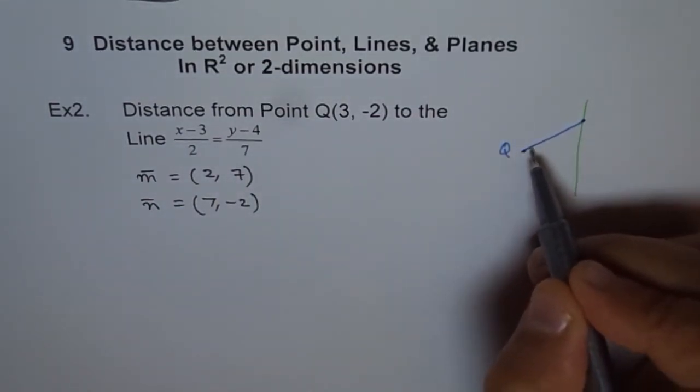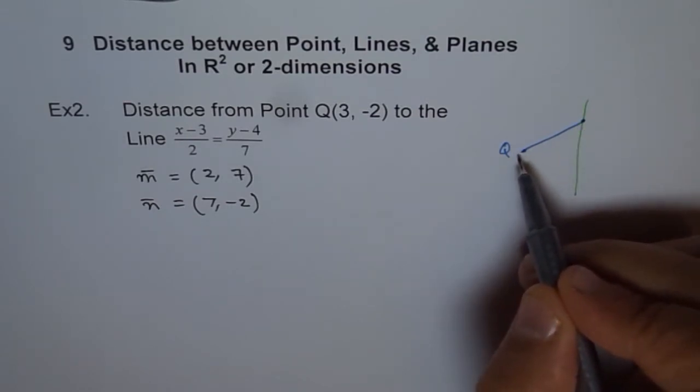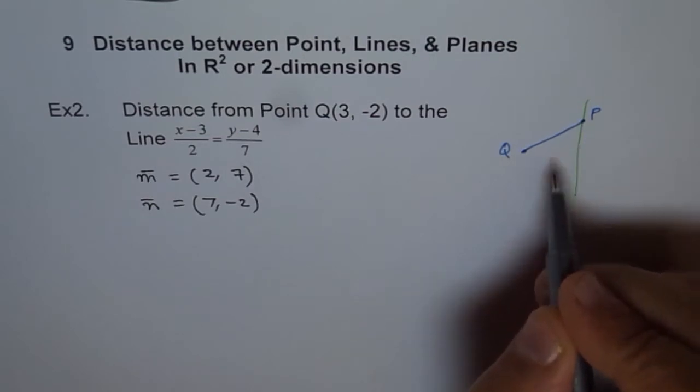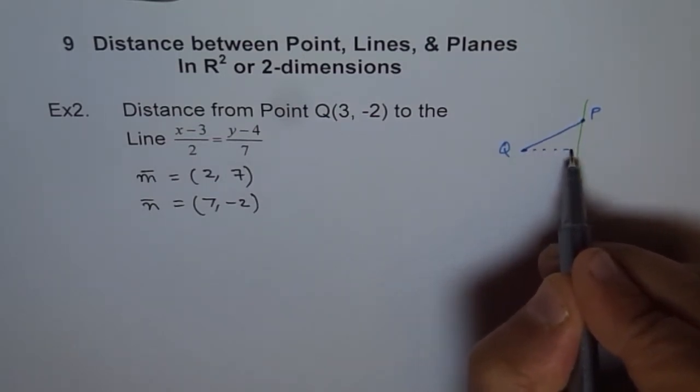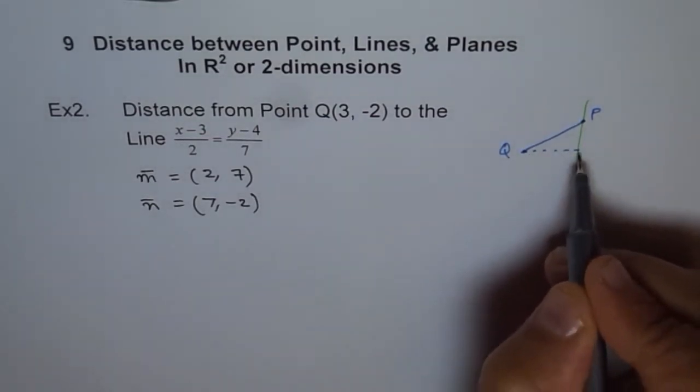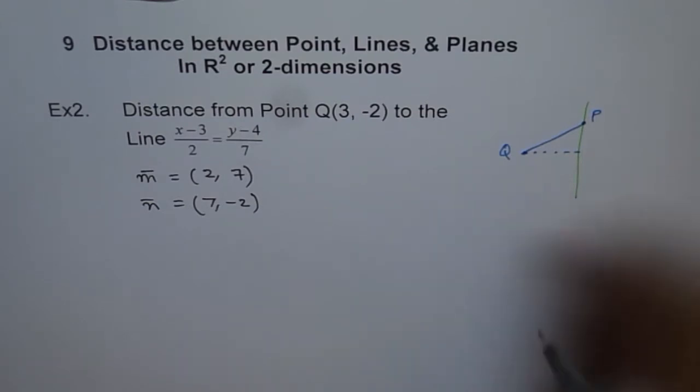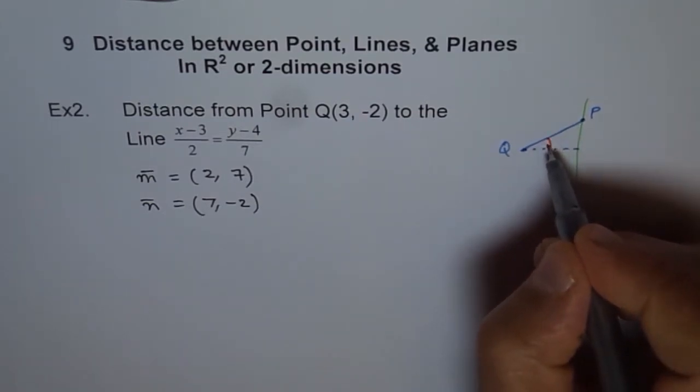But the shortest distance is not from Q to the point given. But the shortest distance is here. How to get that distance? You will see this is actually the vector projection of QP.